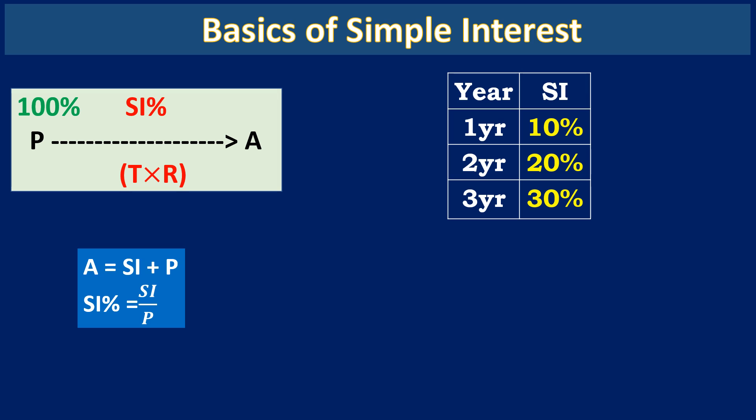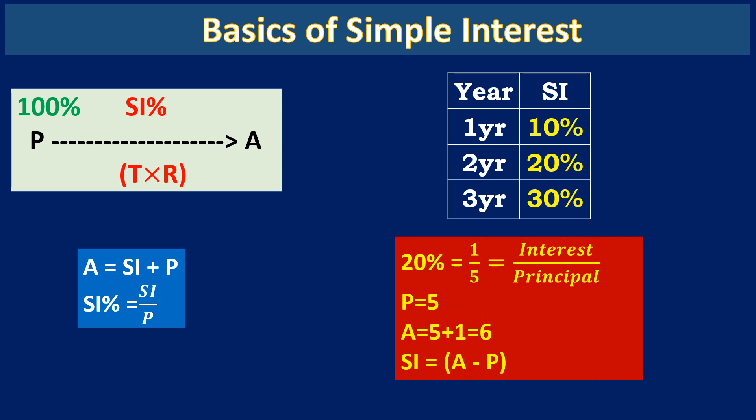Let us assume the annual interest rate is 10% per annum. Then the simple interest for two years at 10% would be 20%, and for three years it would be 30%. For example, given an interest rate of 20%, which equals 1/5, the principal is 5 and the SI is 1. The amount due at the end of one year is A = 5 + 1 = 6. Simple interest can also be calculated as SI = Amount − Principal.